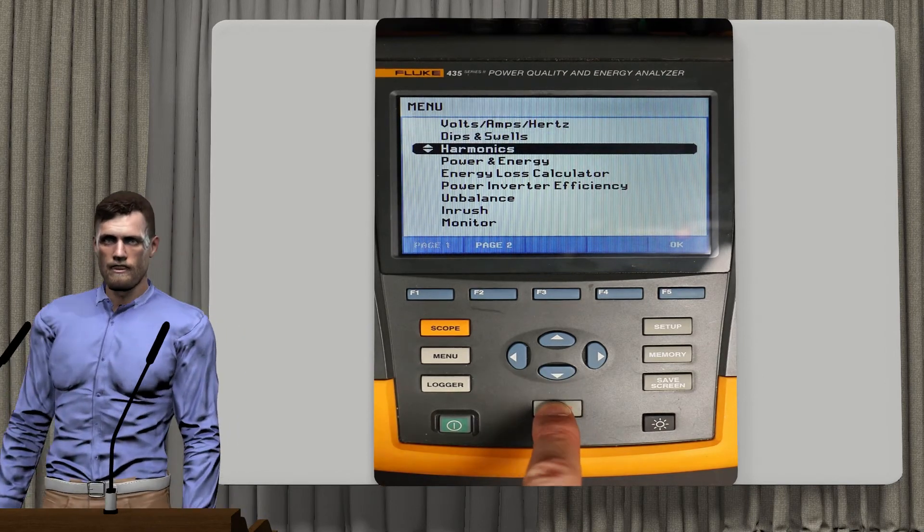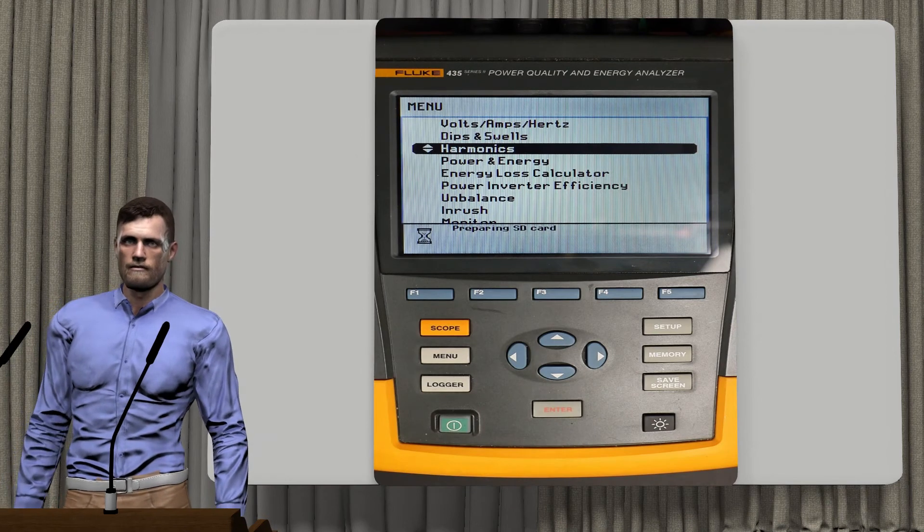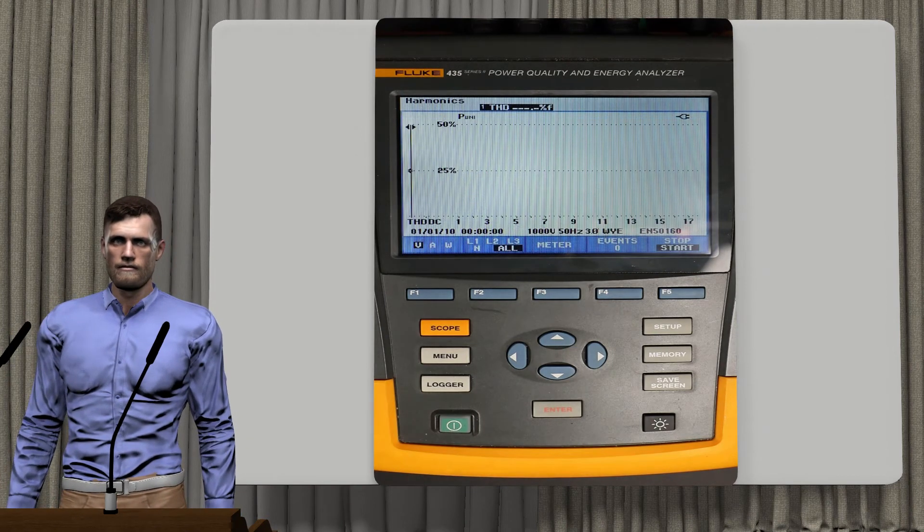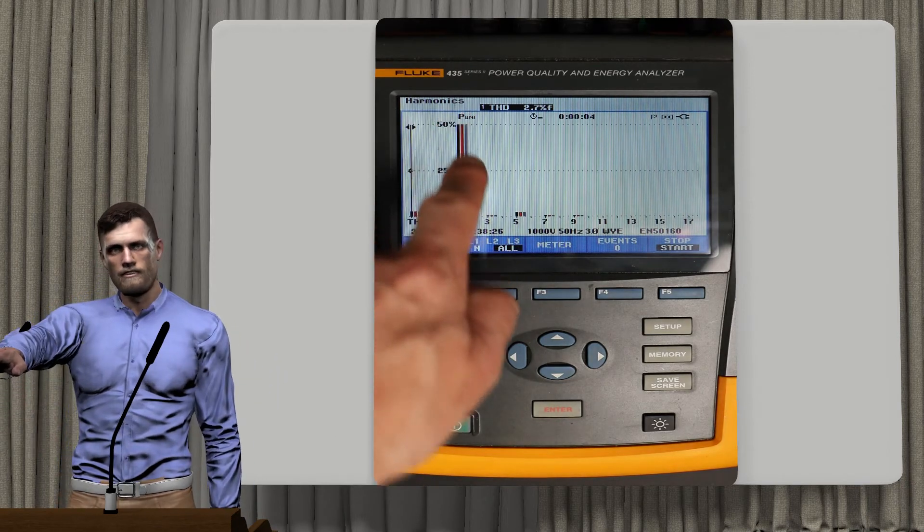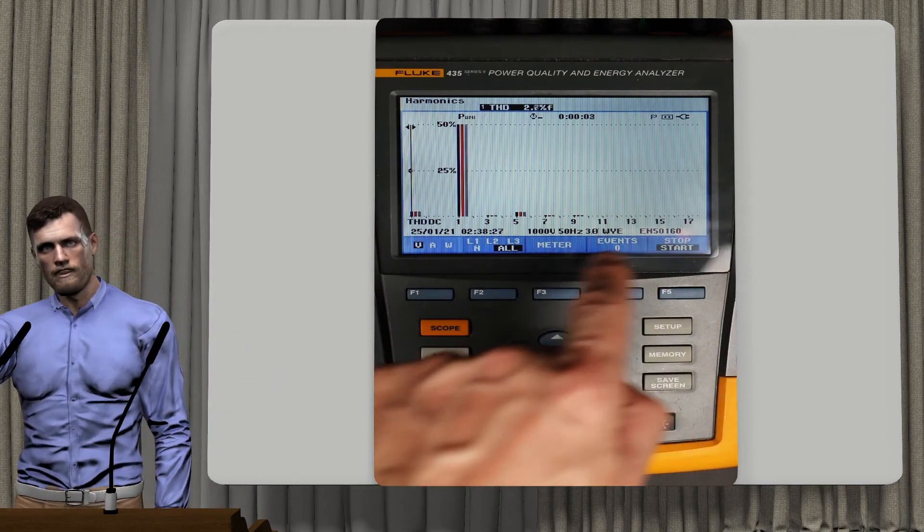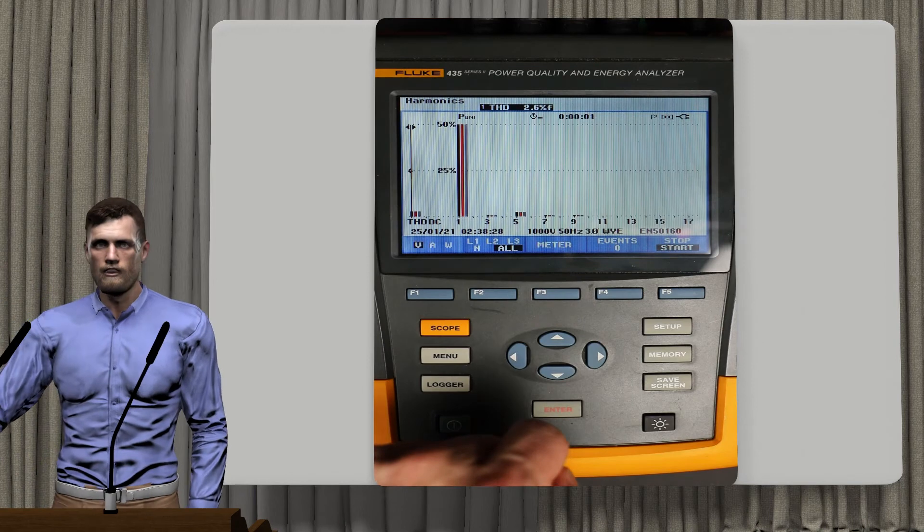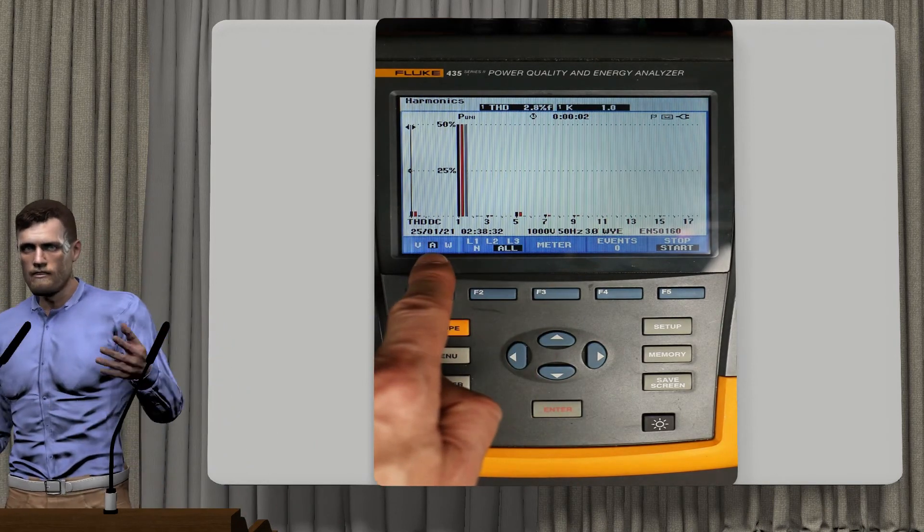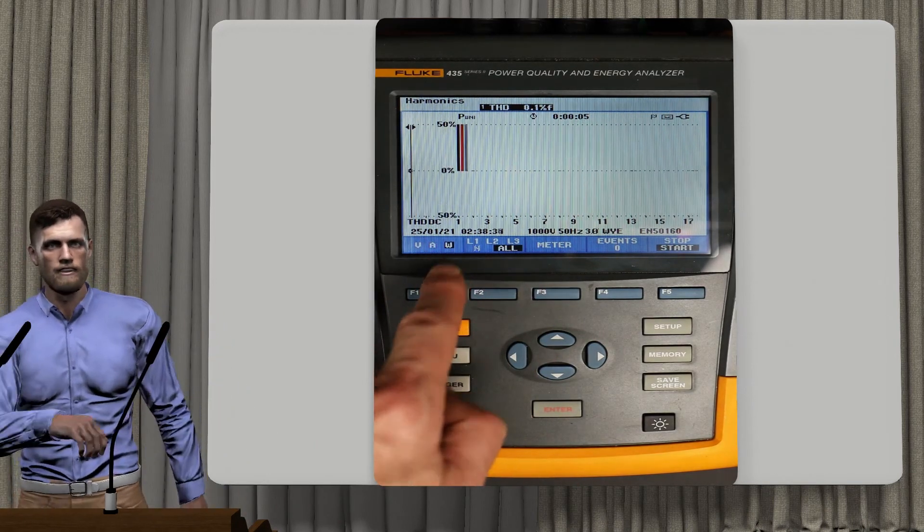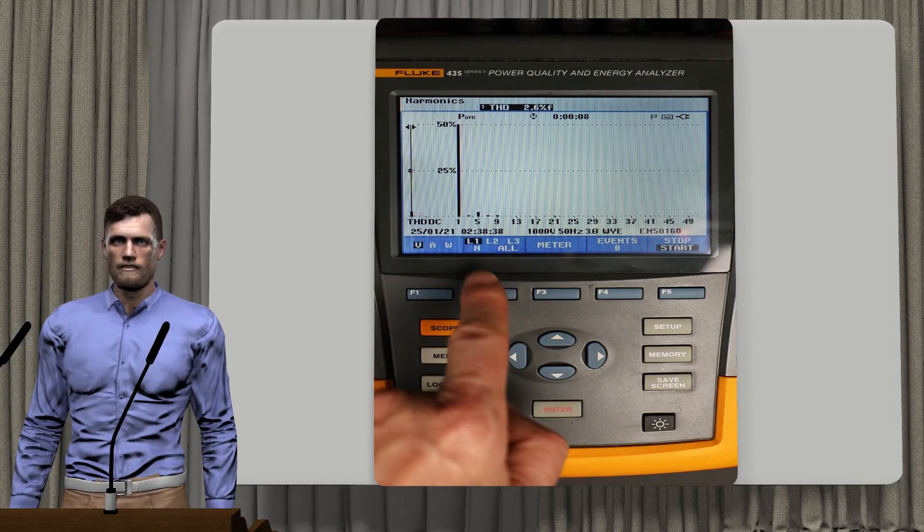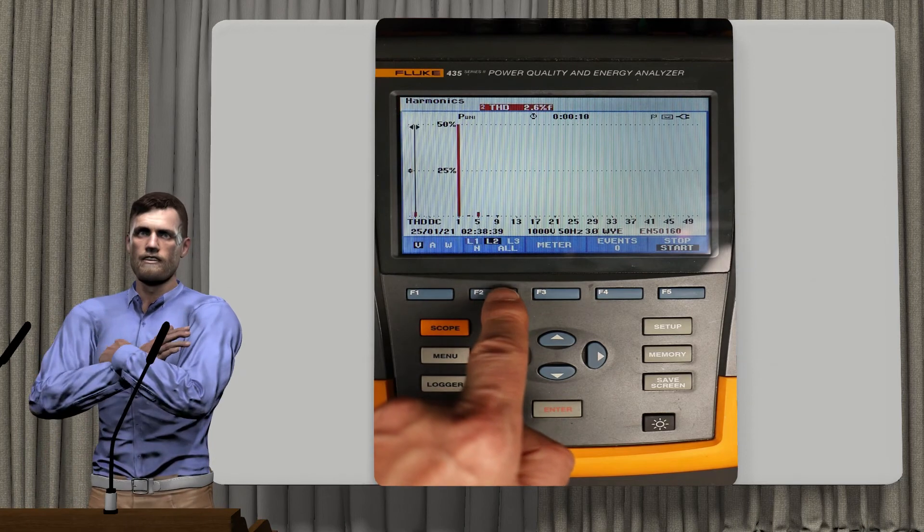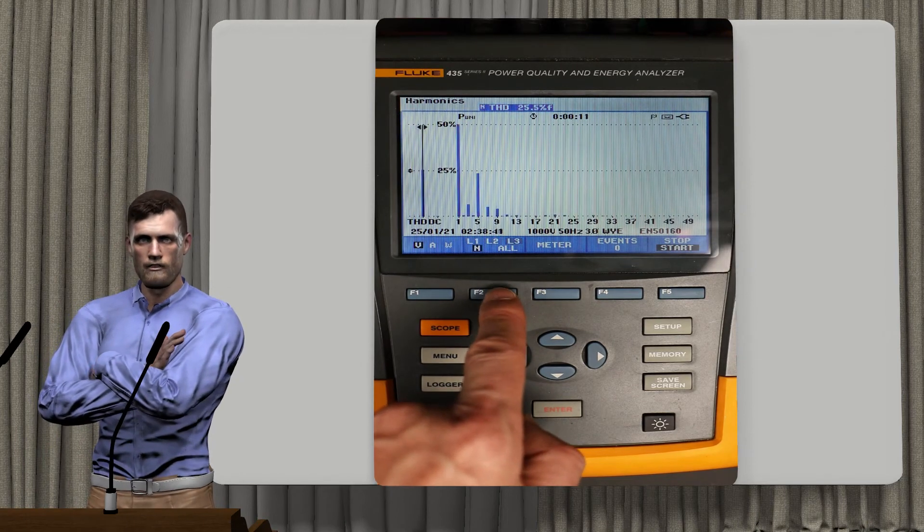As we can see, as soon as we enter the harmonics menu, the typical bar graph appears, where on the horizontal axis we have the order of the harmonic, and on the vertical axis the magnitude of it. This equipment can analyze up to the 50th harmonic. With the F1 button we can select between voltage, current or power harmonics. With F2 we can select if we want to visualize the three phases, or each phase individually, each one with a different color.